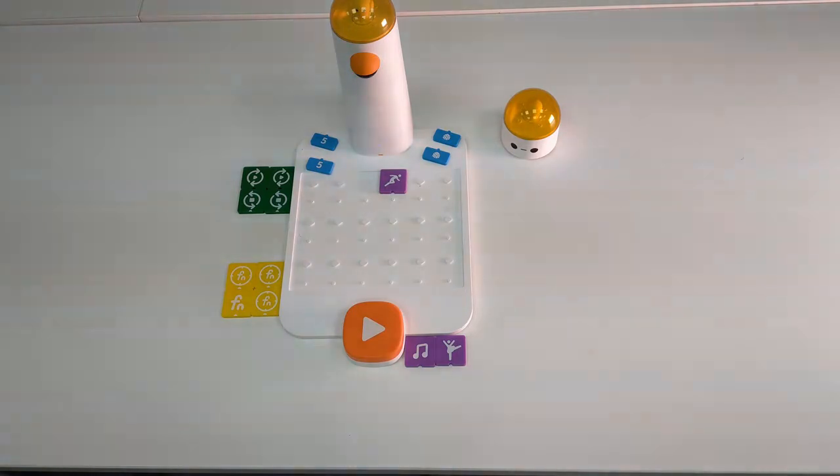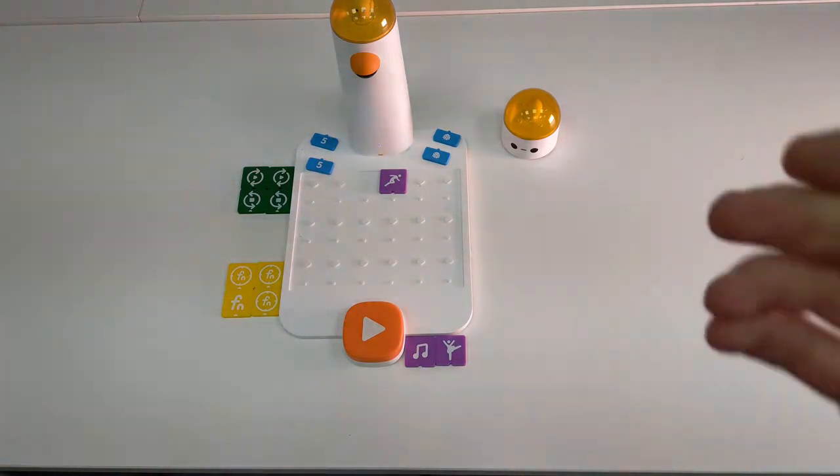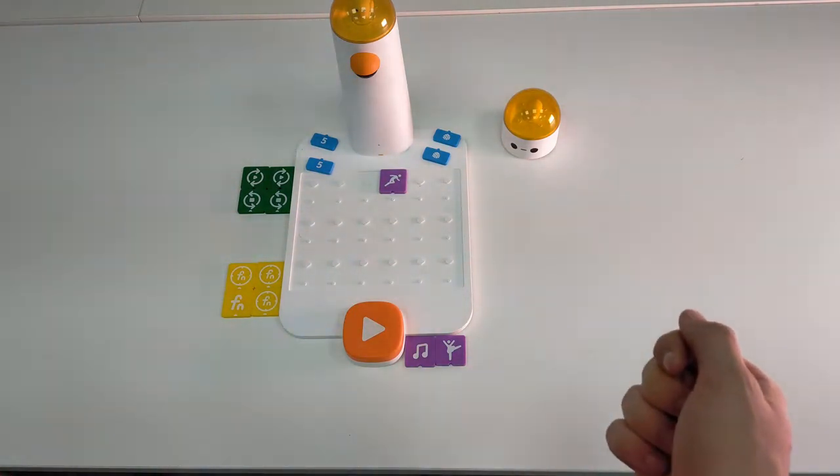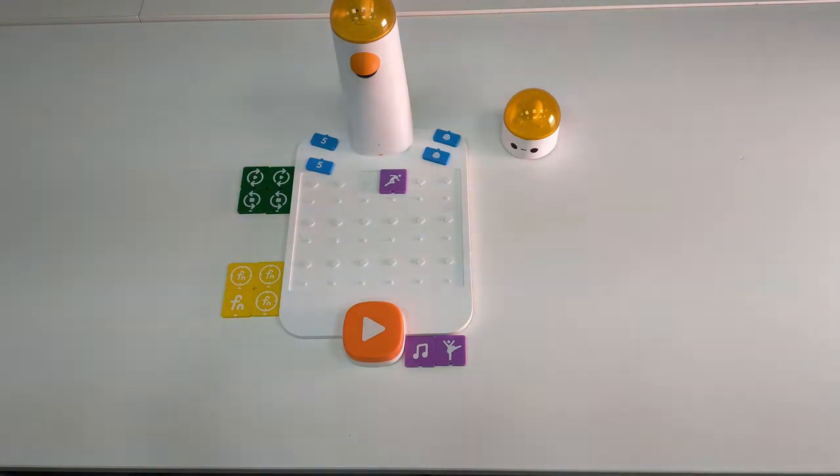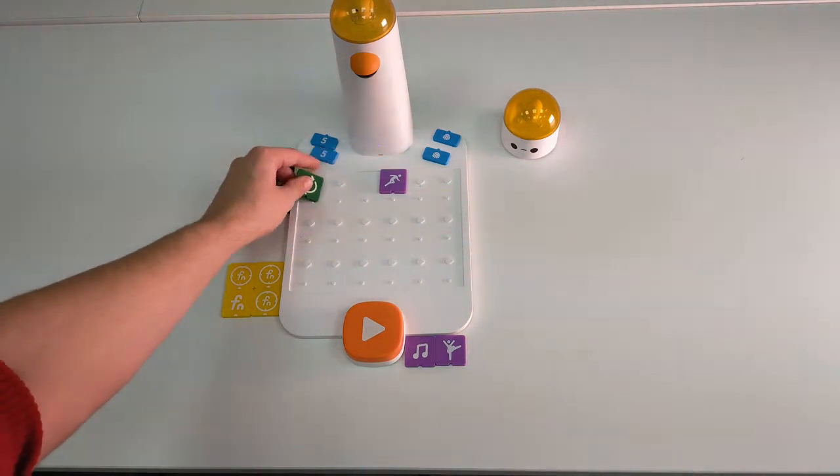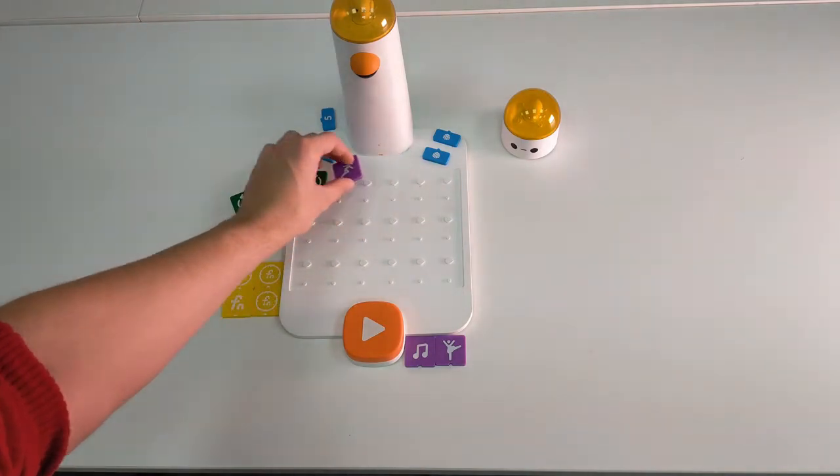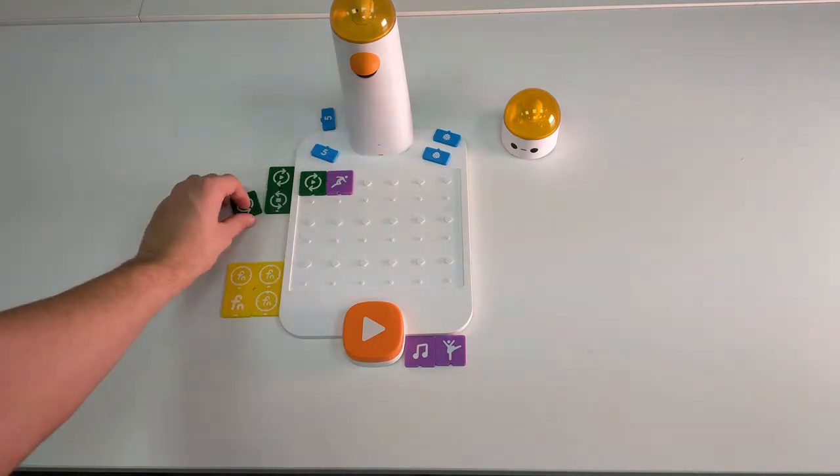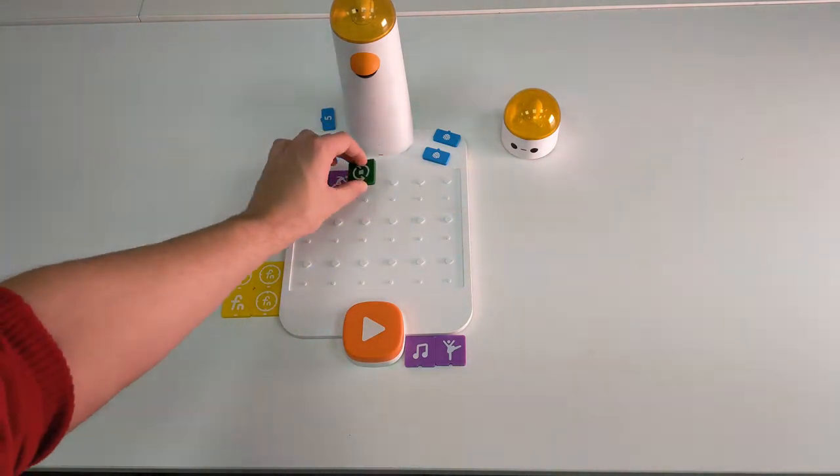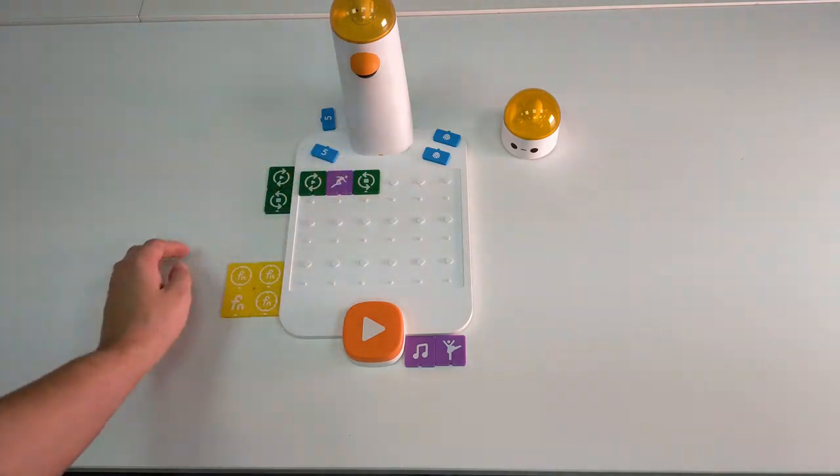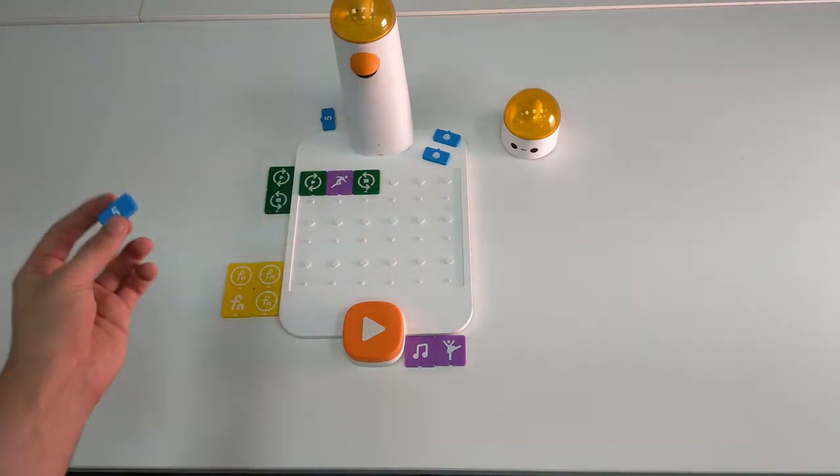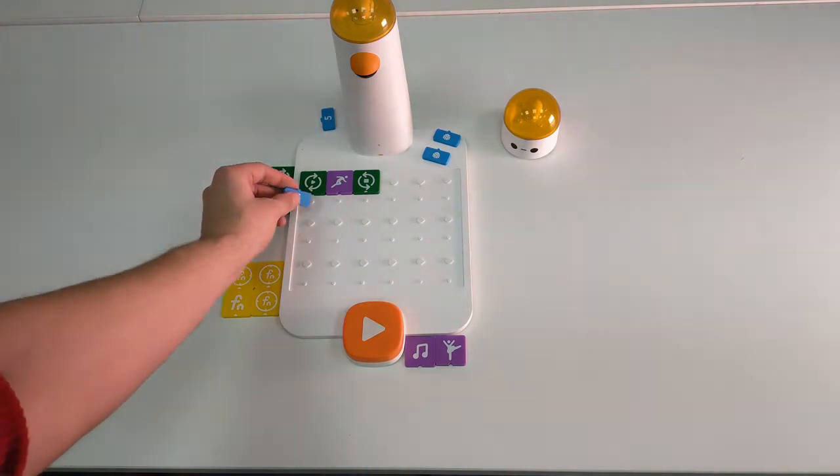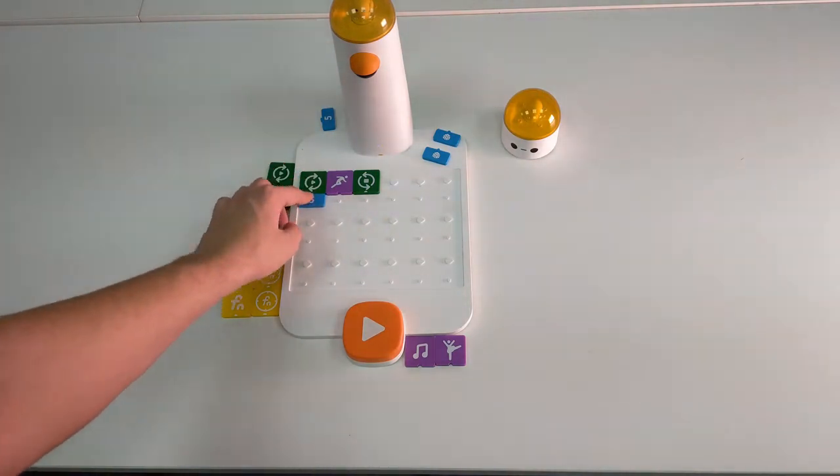Next let's try cycles. Put a block of the beginning of the cycle on the board. After that, put the block what you need to repeat. And in the end, finish the cycle. Don't forget to put number how much times you need to repeat this. For example, 5.